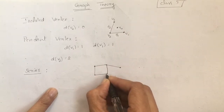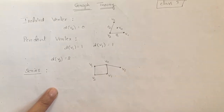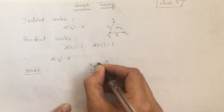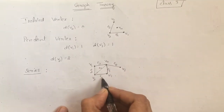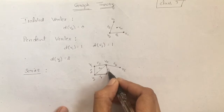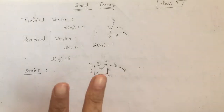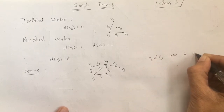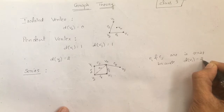Let me take one more example. This is my graph with vertices v1, v2, v3, v4, and v5, and edges e1, e2, e3, e4, e5, e6. Now I can say edges e1 and e5 are adjacent, and these two edges are in series because their common vertex v1 is of degree 2.